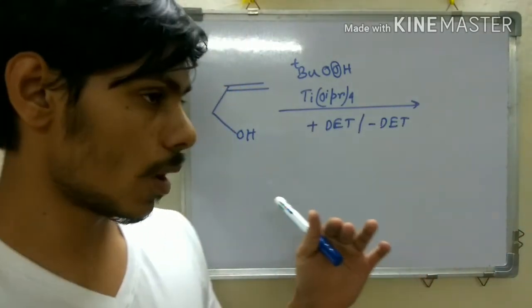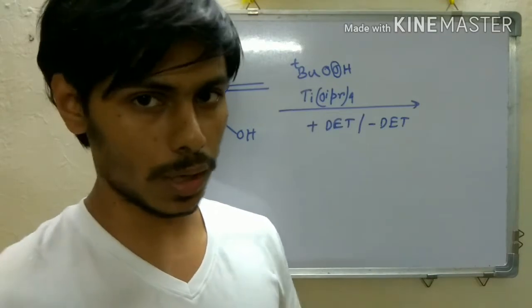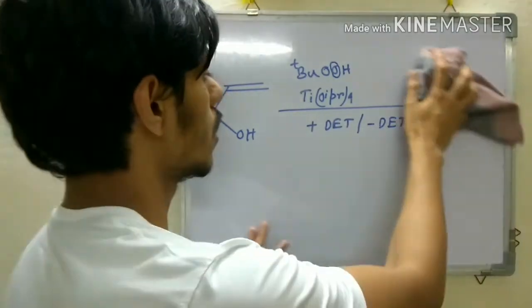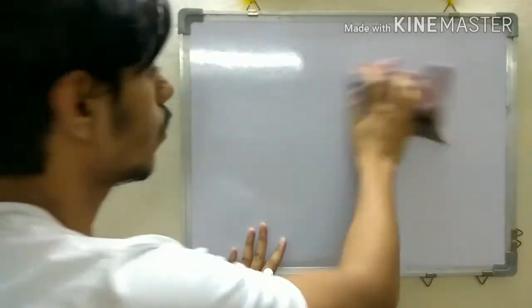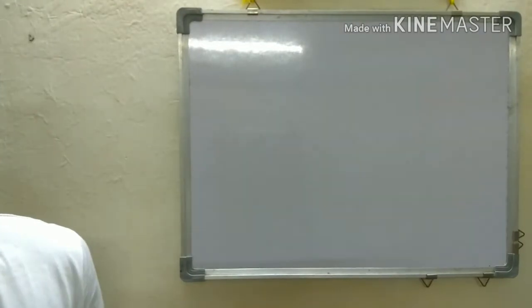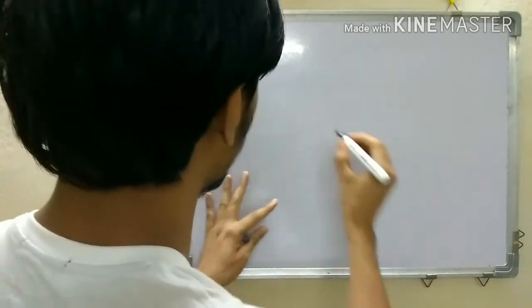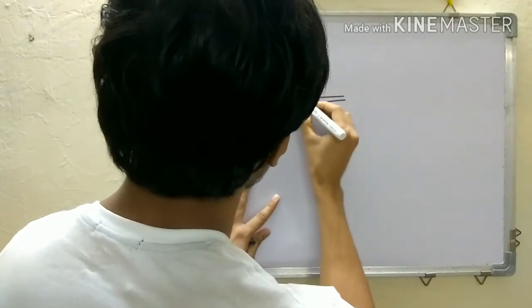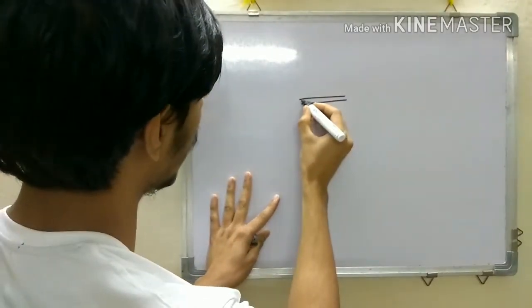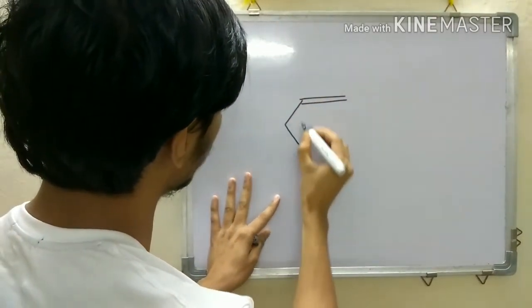You just have to know the outcome, and that outcome is very simple. I will be explaining the mnemonic of how to predict which product you will get. For that, you have to draw your alkene in a special way. This is your allylic alcohol.